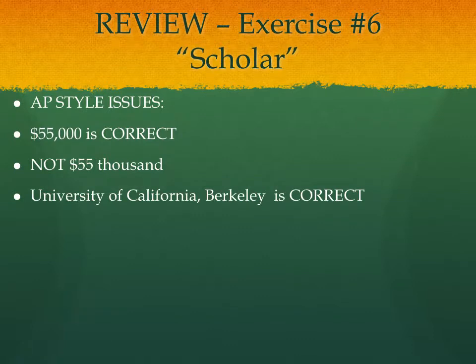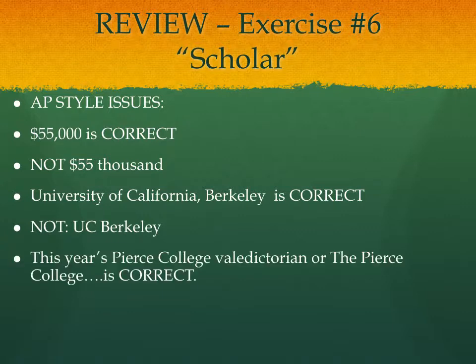Also, when listing the name of the school, it's University of California, comma, Berkeley. That is correct, and you use the entire name on first reference. If you mention it a second time, later in the story, you could say UC Berkeley or just Berkeley. But on first reference, it's always University of California, Berkeley — not UC Berkeley.